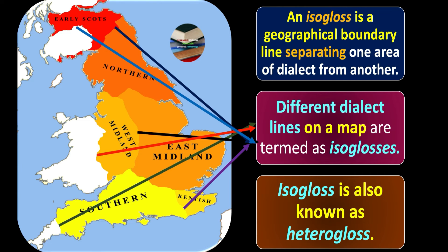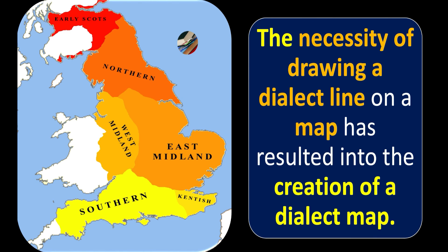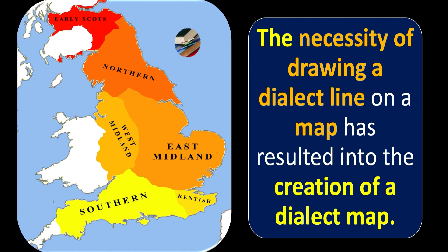These different lines separating one dialect from another can also be termed as isoglosses. The necessity of drawing a dialect line on a map has resulted in the creation of a dialect map. A dialect map is created because of geographical demarcation of linguistic features, and this has further resulted in what we call linguistic atlases. Hope you understand the concept.